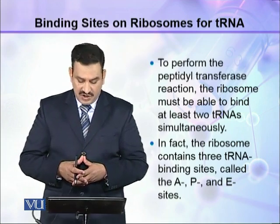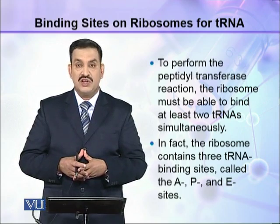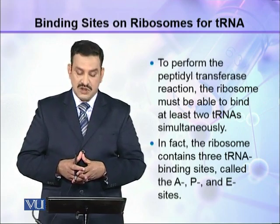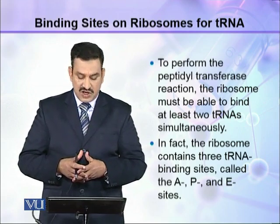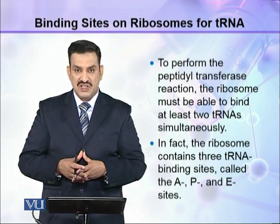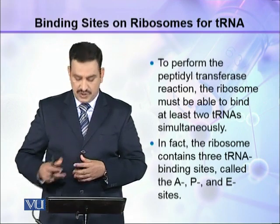In fact, the ribosome contains three tRNA binding sites. And these sites are A site, P site and E site.